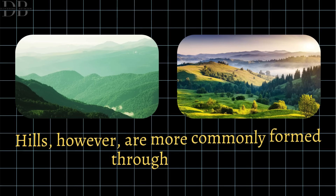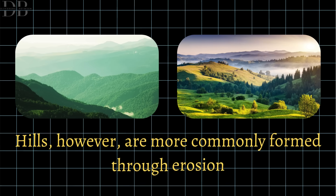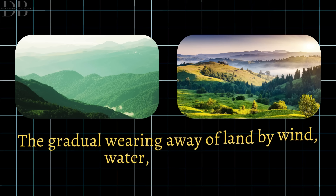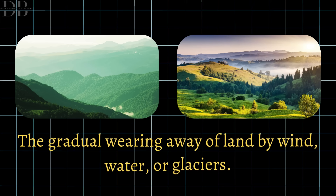Hills, however, are more commonly formed through erosion — the gradual wearing away of land by wind, water, or glaciers.